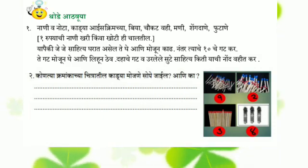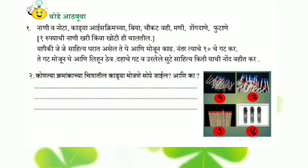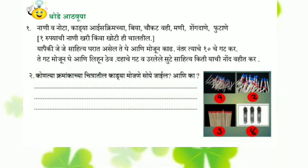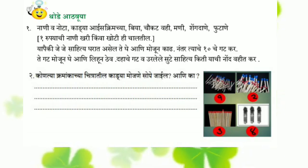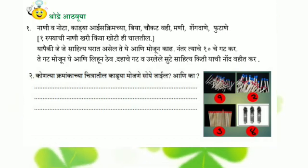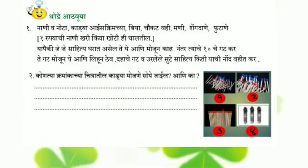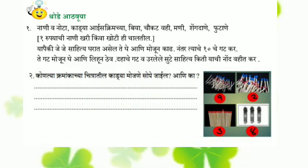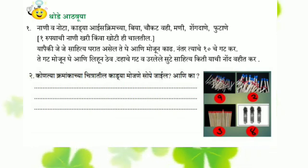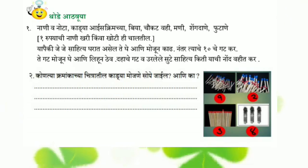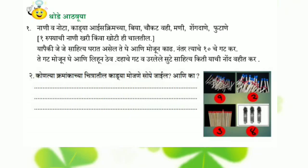Nani vah nota. Kalya ice cream chan. Bia, chaukat vahi. Mani, shengdane, futanane. Eek rupajachi nani khari — kima, khupti hii chalitil. Yaha pahe ki jhe jhe sahitthya gharat asel, tee ghe aani mojun kaad. Nantar tiyahe dhahat se ghat kar. Tee ghat mojun ghe aani vahit lihun thheo. Dahat se ghat vah urlele sute sahitthya — kiti, yaha chini nond vahitkar. Hau upakram pratyekan e gharay karun pahaj chah ahe.